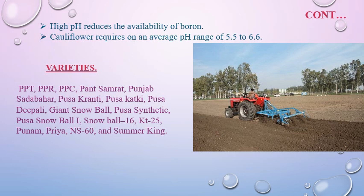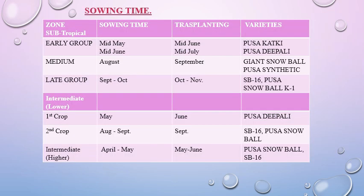NS60 and Summer King. Sowing time for the cultivation of cauliflower: early group mid-May to mid-June, medium group August, and late group September and October. Intermediate lower first crop May, second crop August and September, and intermediate April and May.